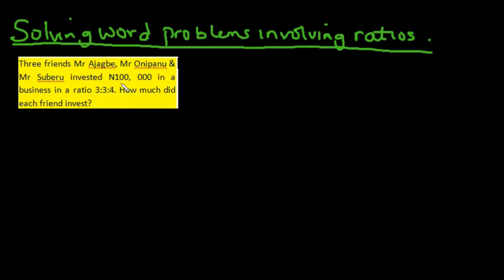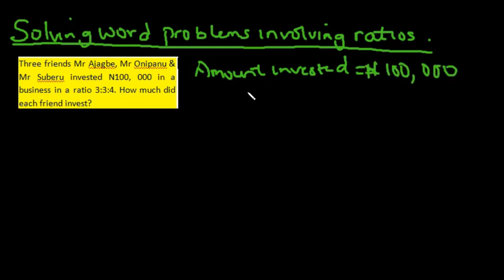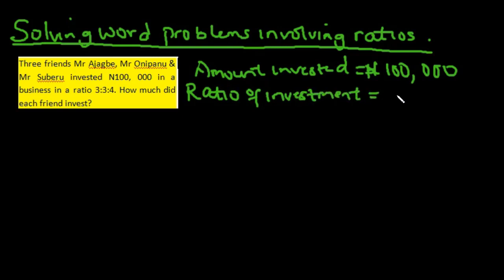A good student writes out the parameters given so you don't mix things up — don't just go straight to the answer. The amount invested is one hundred thousand naira, and the ratio of investment is three to three to four, which means somebody invested three parts of the whole hundred thousand naira, another person contributed three, and the next person contributed four.